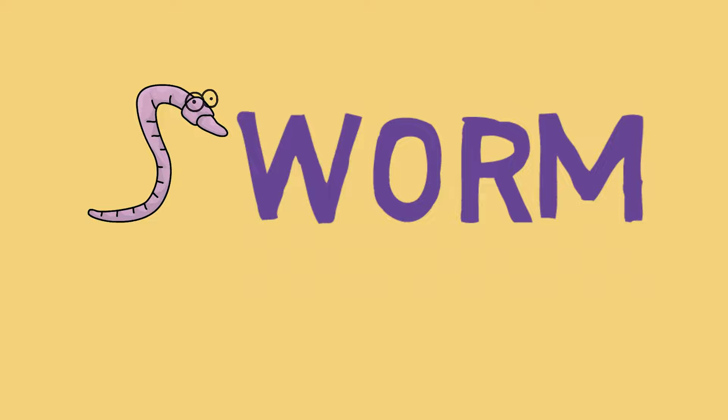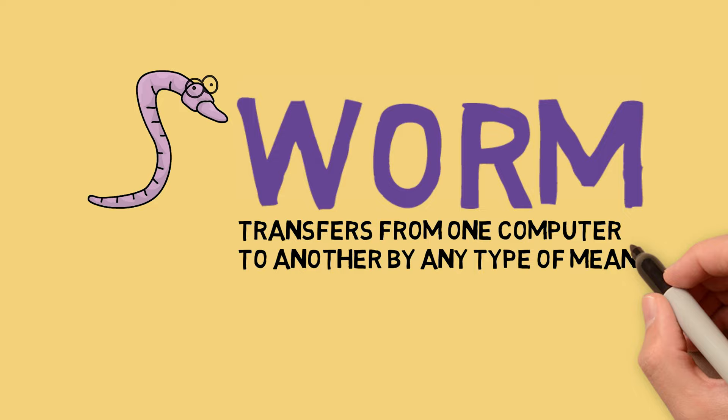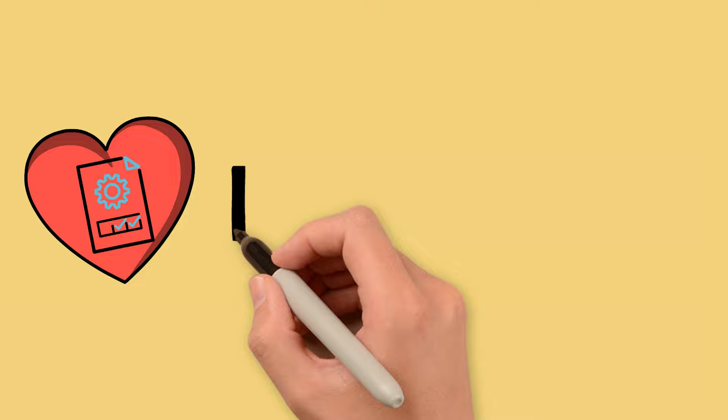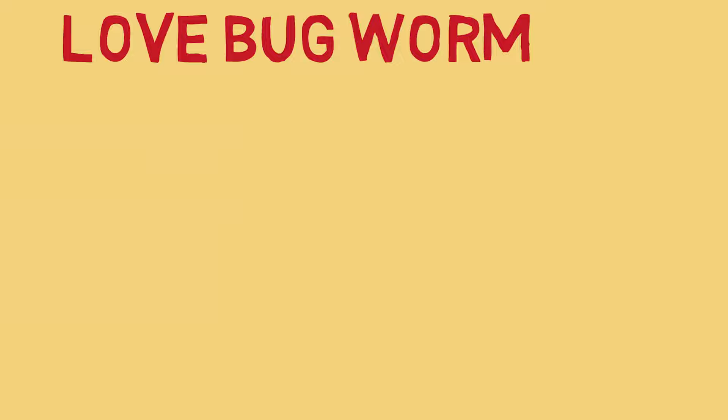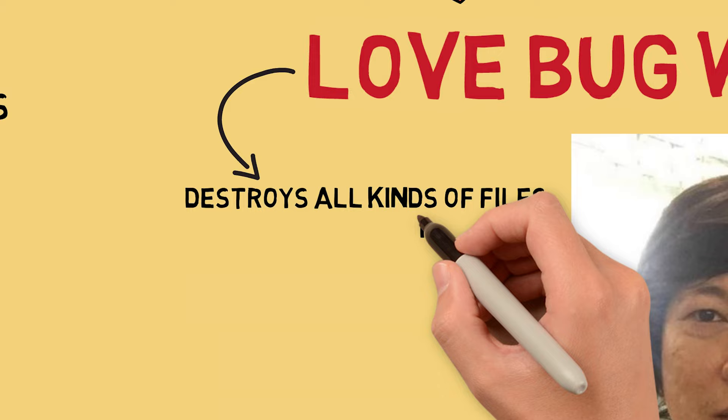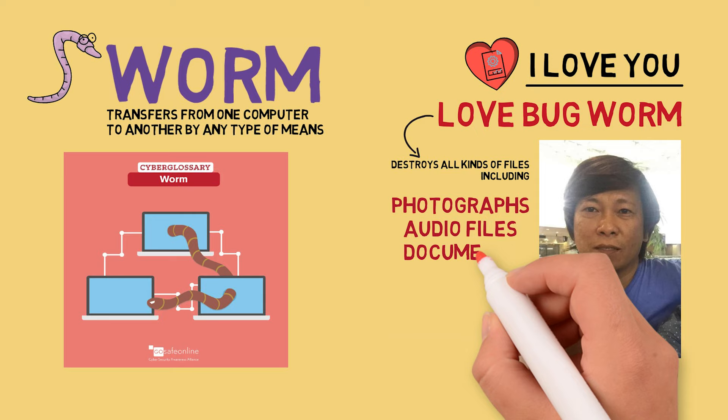The next variant is Worm. This variant is a malicious program that transfers from one computer to another by any type of means. Often, it uses a computer network to spread itself. An example of this is the I Love You Worm, or sometimes referred to as the Love Bug Worm, which was created by a Filipino named Onel de Guzman. This I Love You Worm destroys all kinds of files including photographs, audio files, and documents. Affected users who didn't have backup copies lost them permanently.